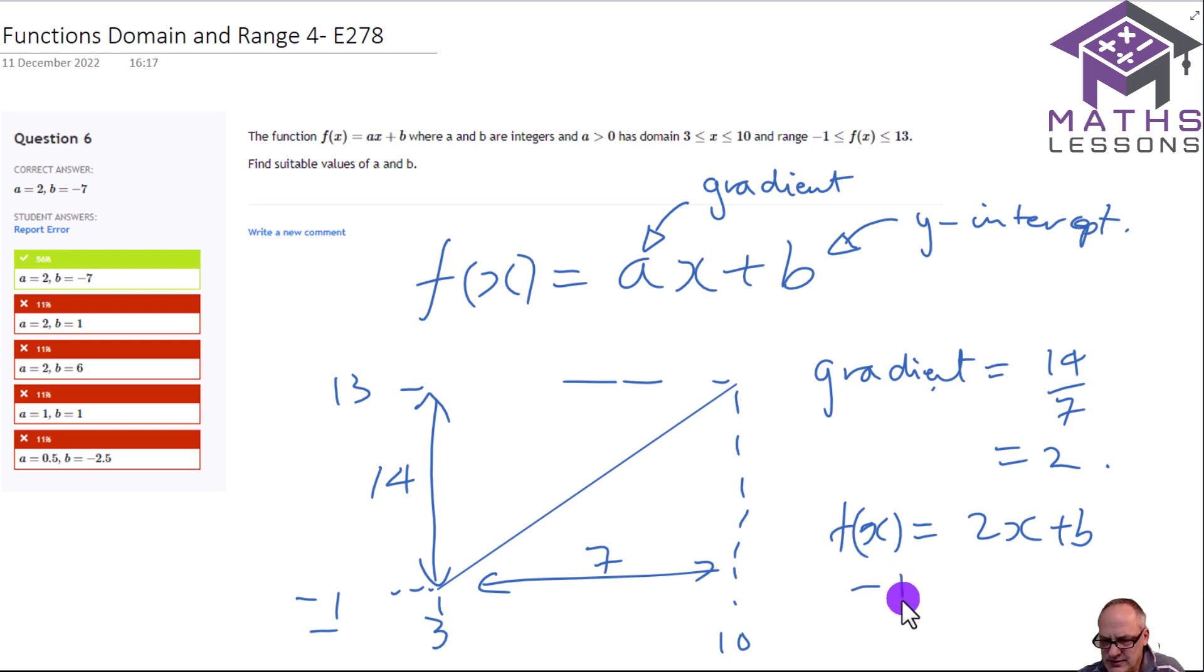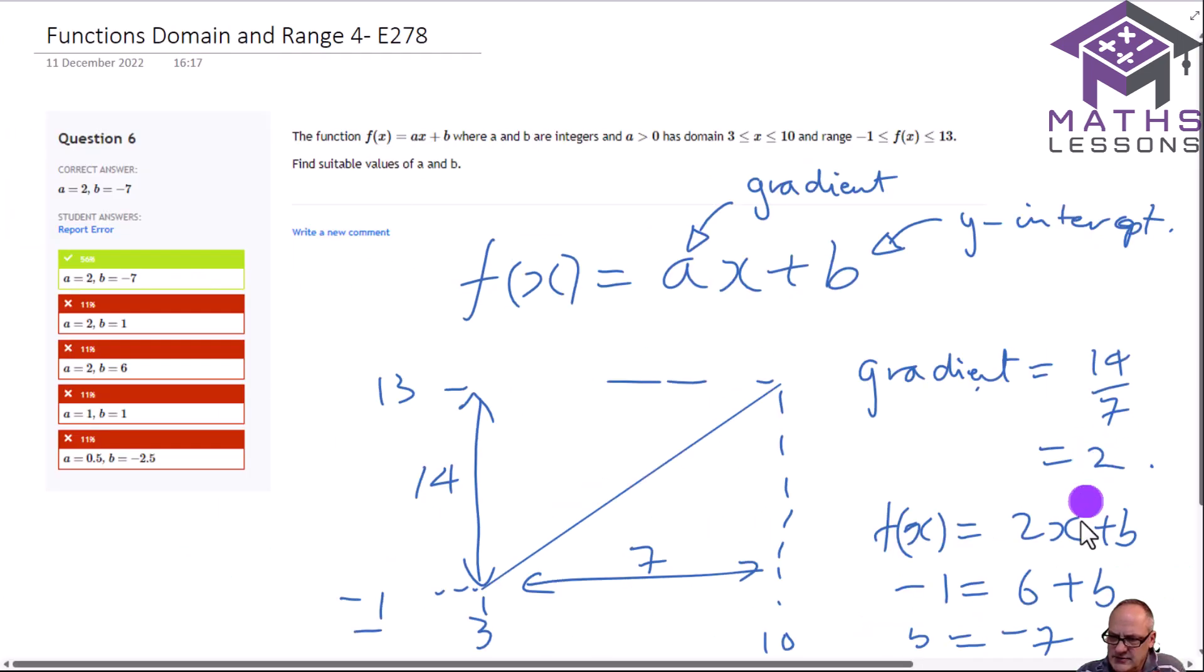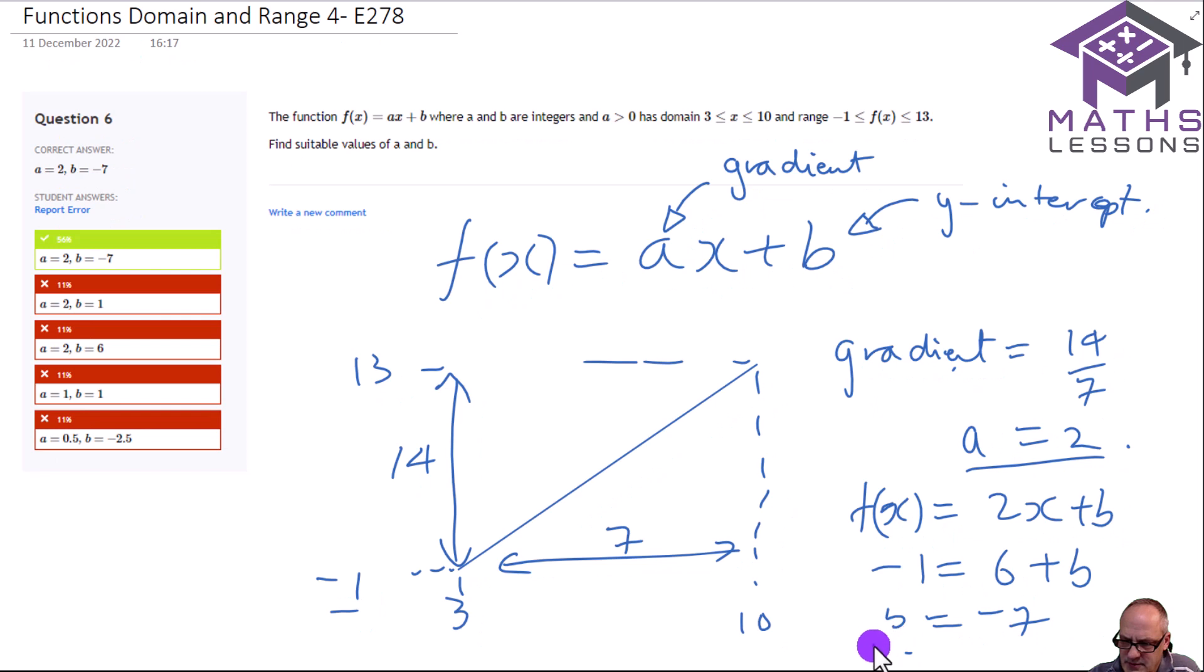So you put minus 1 here, put the 3 where the x is, we get 2 times 3 is 6 plus b. So therefore b must equal minus 7. So we get a equal to 2 and we get b equal to minus 7. So look, a equal to 2, b equals minus 7. And you see this was done by more students because we had a similar example in the class.